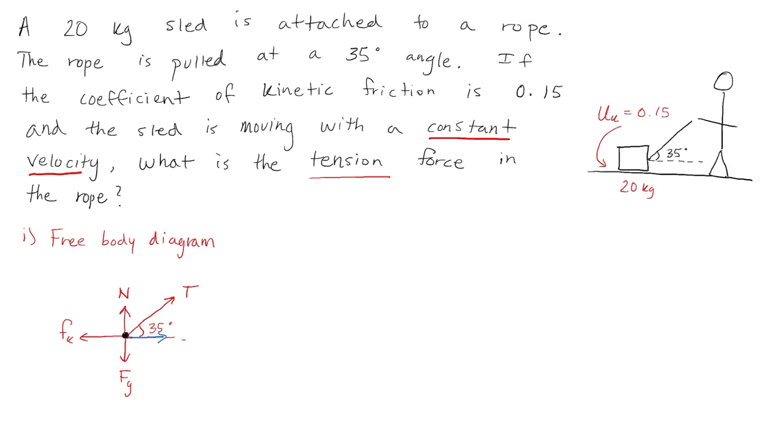Now because the tension force is at an angle, we can break the tension force into its x and y components. So we have Tx and Ty. Now we can move on to writing our F net equations. Because we have forces acting along both the x-axis and the y-axis, we will need to use an F net x and an F net y.